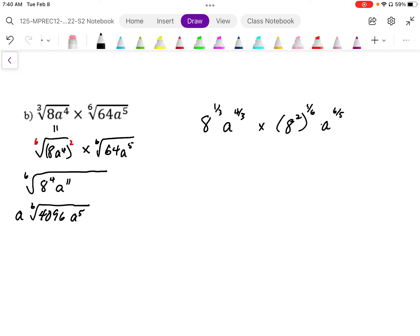Now, I'm just going to simplify this. 8 to the power of 1 third times 8. This becomes 8 to the power of 1 third. So this power, when I combine, becomes 1 third.